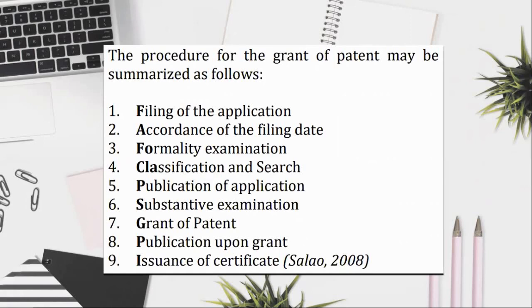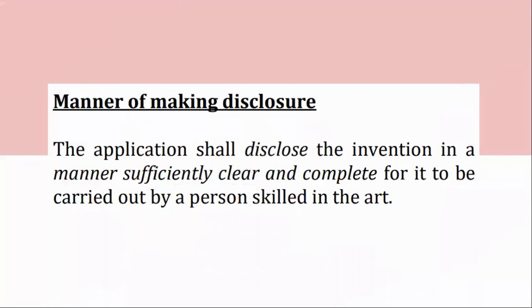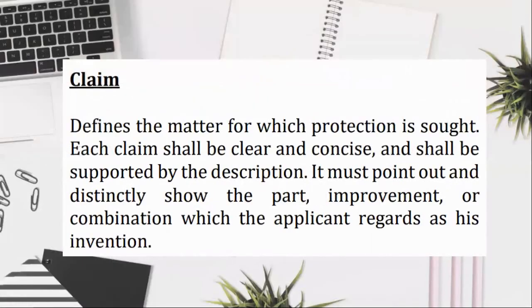Manner of making disclosure: the application shall disclose the invention in a manner sufficiently clear and complete for it to be carried out by a person skilled in the art. The claim defines the matter for which protection is sought. Each claim shall be clear and concise and shall be supported by the description. It must point out and distinctly show the part, improvement, or combination which the applicant regards as his invention. Abstract: a concise summary of the disclosure of the invention as contained in the description and claims, and merely serves as technical information.